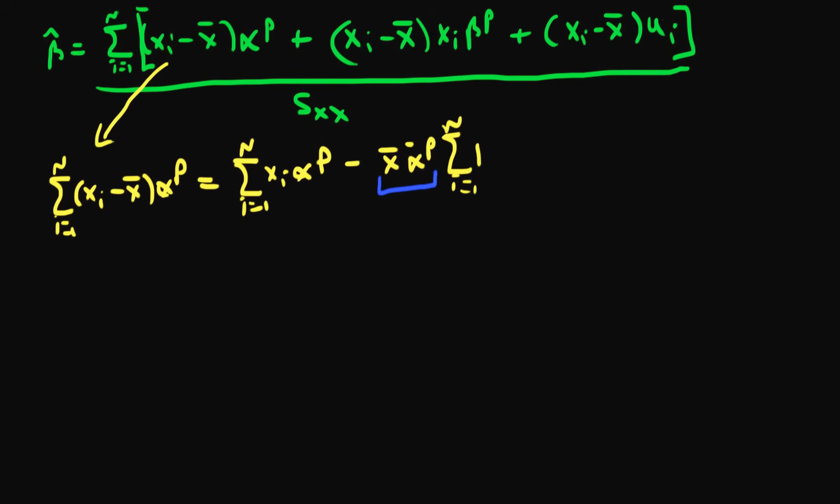So what does this term equal? Well, if I sum 1 n times, I just get n. And similarly for this first term here, because alpha p does not actually have any summation indices, I can take it outside of the summation, so I'm just left with the sum of xi. But we know that the definition of x-bar is that it's equal to the sum of xi divided by n. So if I take that n up here, I know that the sum of xi is just equal to n x-bar. So that's equal to n x-bar times alpha p minus n x-bar alpha p, which obviously both of these things are the same, so that's zero. So this first term at the top disappears.